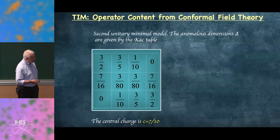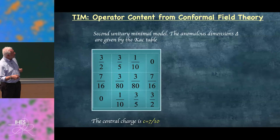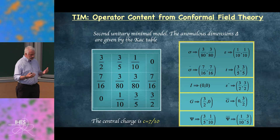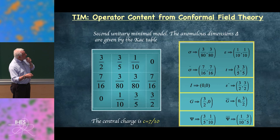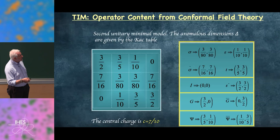For the tricritical Ising model, the Kač table gives anomalous dimensions organized with nice properties from reducible representations, with central charge 7/10. To reconstruct physical fields, you take left and right copies of the algebra and combine them. The field with dimensions (3/8, 3/8) is associated to the leading magnetization; (1/10, 1/10) is the energy density; (7/16, 7/16) is the sub-leading magnetization; and (3/2, 3/2) is the density operator.